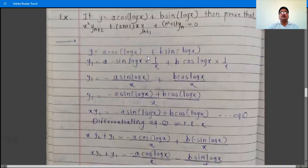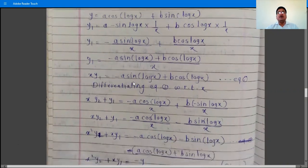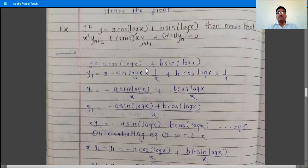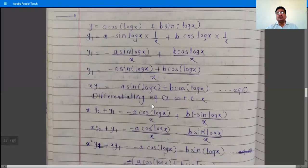After the first order differentiation we have this step. The strategy is: if there is a quantity at the denominator, shift it to the LHS; if there is a square root, square both sides; and if possible, adjust y at the first step. But here y = a·cos(log x) and we have sin(log x), so we cannot adjust y yet and must differentiate again.